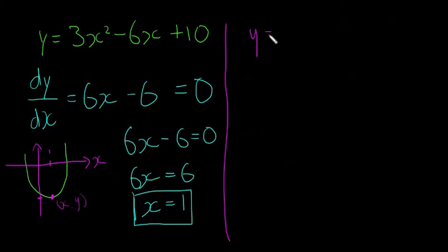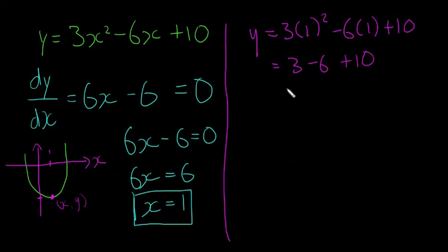So we're going to say y is equal to 3 by 1 squared minus 6 by 1 plus 10, which is equal to 3 minus 6 plus 10, which is equal to 7. Okay, so obviously this sketch here is just rough. I should have drawn the x-axis much lower down. But the idea is that the turning point of this curve here is (1, 7).